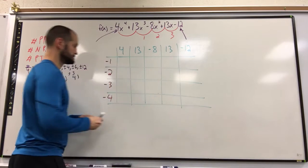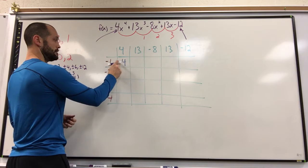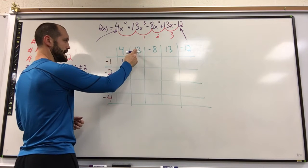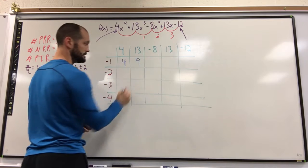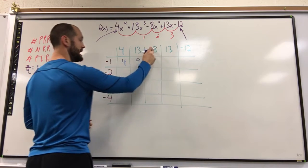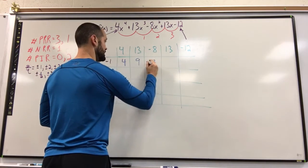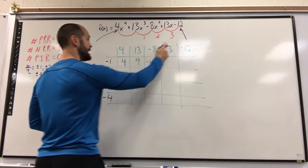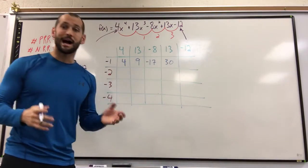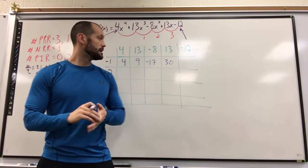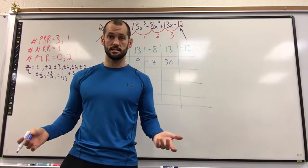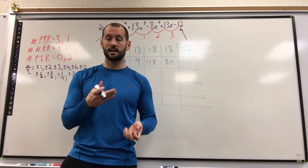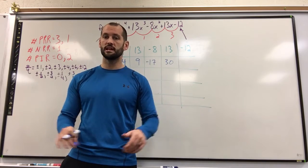We use blue. Multiply, add it to this. So we get negative 4 plus 13, 9. Multiply, add, negative 17. Multiply, add, we get 30. Now keep in mind, I know my goal. If it's a root, the remainder will be zero. I want you to be intelligently lazy. If you realize something is not going to work out, stop. Move on to the next one.